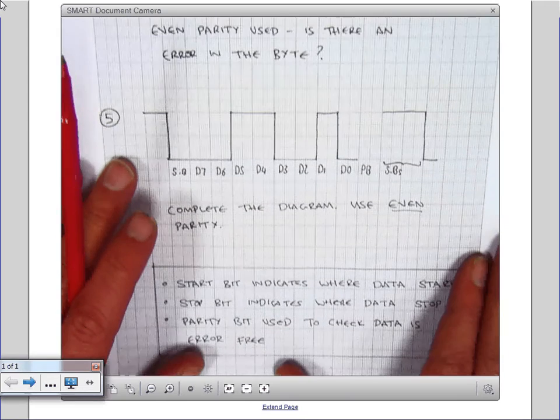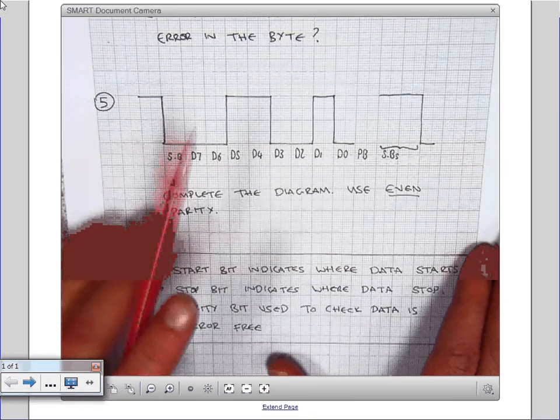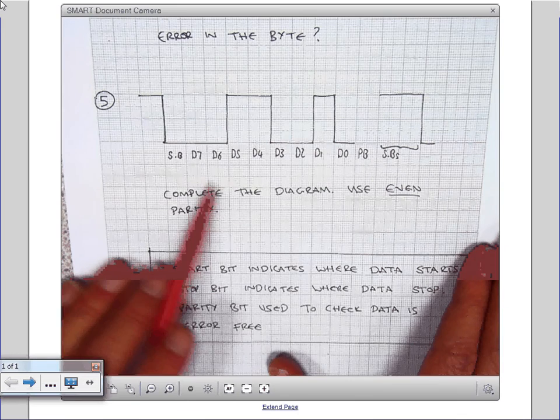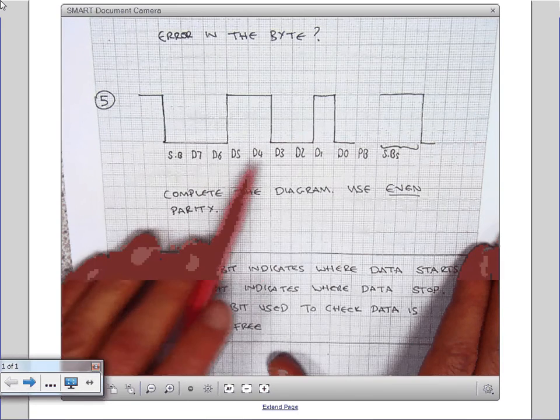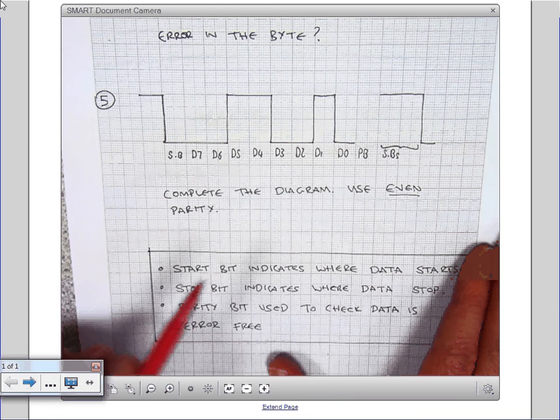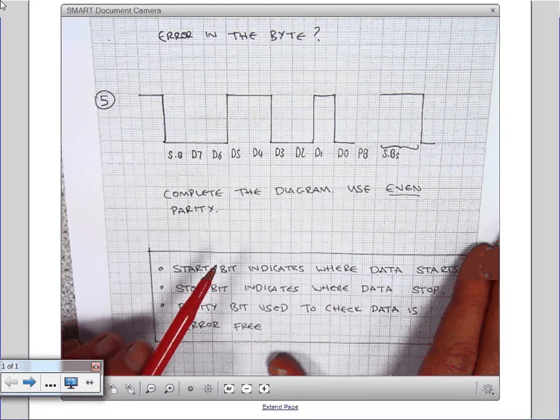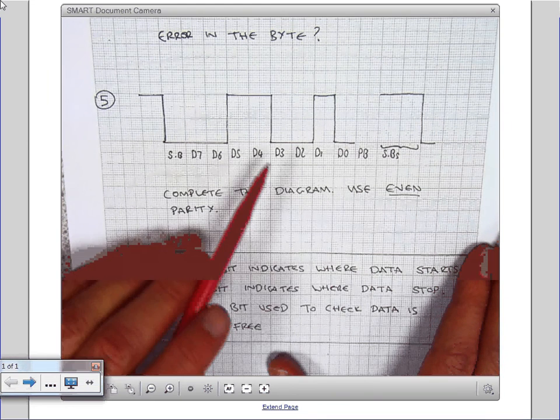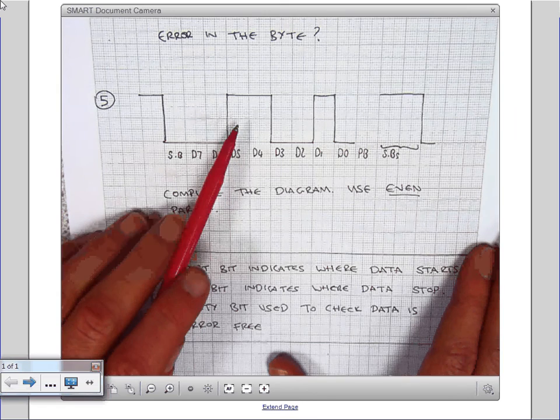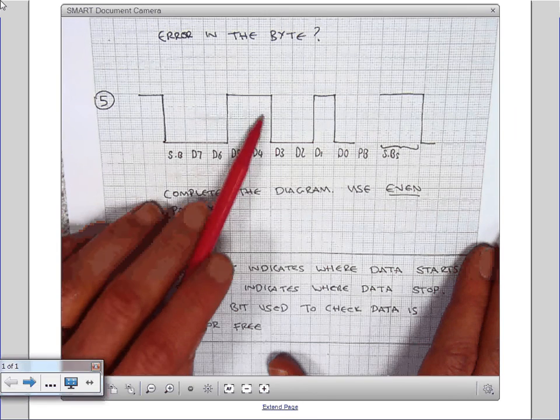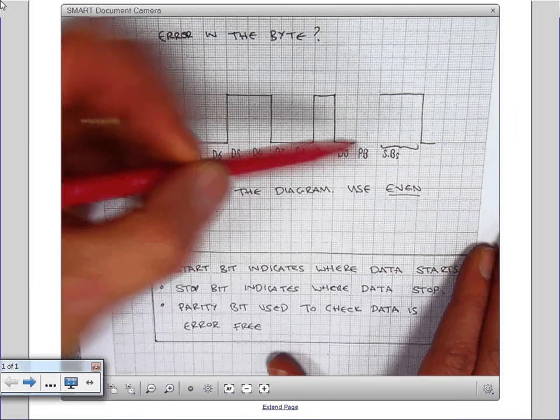So here's another one for you to pause the video in a moment. Can you complete the diagram using an even parity system, what would you set the parity bit? OK, so if we use an even parity, we need an even number of ones. The byte itself has got one, two, three. We need to make that even, so we add an extra one to give us four ones.